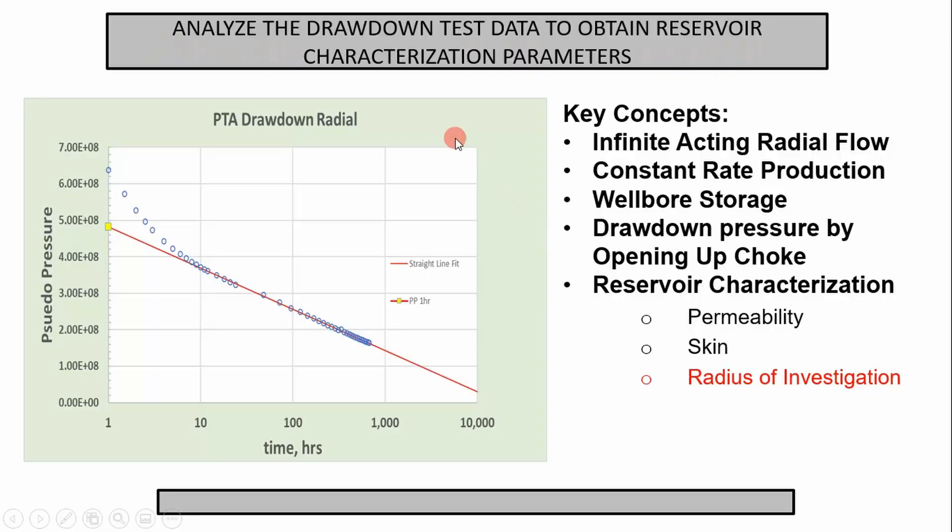Welcome back. Today we're talking reservoir engineering, specifically pressure transient analysis. We previously covered rate transient analysis, which was our decline curve methods to get reservoir characterization parameters. Today we're talking pressure transient analysis — you put a pressure bomb in the well, observe the pressure change with time, and from that you can get reservoir characterization parameters. Today we're working through an Excel example to get those parameters from a drawdown test on a gas well, including permeability and skin.